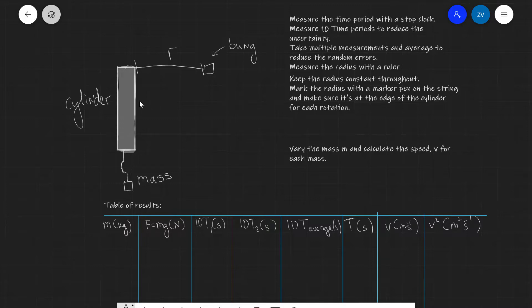We have the cylinder, we also have a mass, and the radius of the circle is r. I'm going to try and keep that length constant throughout this experiment.